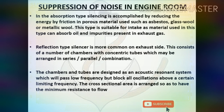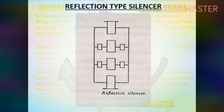In the absorption type silencer, silencing is accomplished by reducing energy by friction in porous material such as asbestos, glass wool, or metallic wool. This type is suitable for intake as the material can absorb oil and impurities present in exhaust gas. The reflection type silencer is more common on the exhaust side. It consists of a number of chambers with concentric tubes arranged in series or parallel combination, designed as an acoustic resonance system which passes low frequency but blocks all oscillations above a certain limiting frequency. The cross-sectional area is arranged to have minimum resistance to flow.